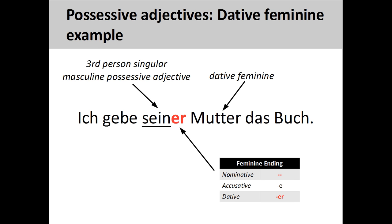Let's now take a look at how to apply these rules. I'll use an example that has 'ein' as part of the root, so you can see the similarity between possessive adjectives and indefinite articles. In the sentence 'Ich gebe seiner Mutter das Buch' — I give the book to his mother — the adjective ending indicates that the following feminine noun, 'Mutter,' is both singular and in the dative case. The root of the possessive adjective indicates the relationship between the mother and the male person, her son.